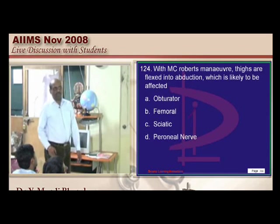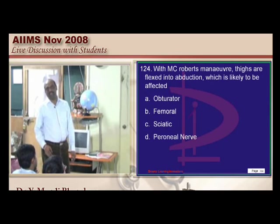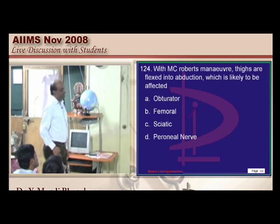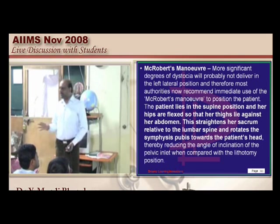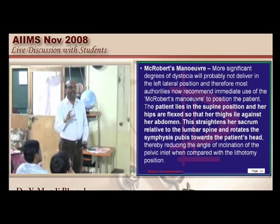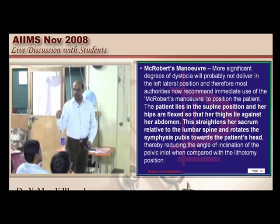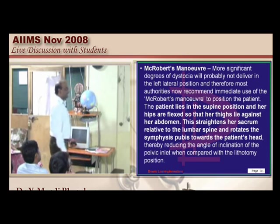With McRoberts maneuver, the patient lies in a supine position with hips flexed so that the thighs lie against the abdomen, which will straighten the sacrum. Post-McRoberts maneuver, patients can have foot drop, so sciatic nerve injury is a common complication to be aware of.